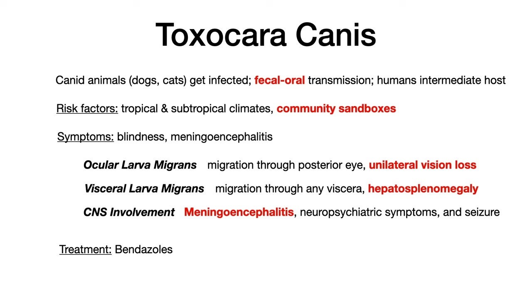The two big symptoms for Toxocara canis infection are blindness and meningoencephalitis. Big picture: visual problems and CNS problems equal Toxocara canis. The first disease process to know is ocular larva migrans — the pathogen migrates through the posterior eye, causing unilateral vision loss. The name tells you exactly what's happening: the larva migrates through the posterior eye, causing ocular symptoms.